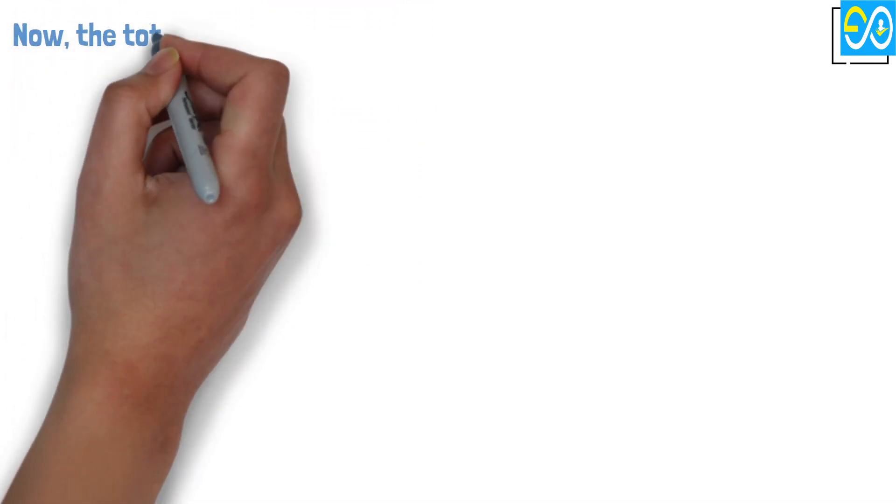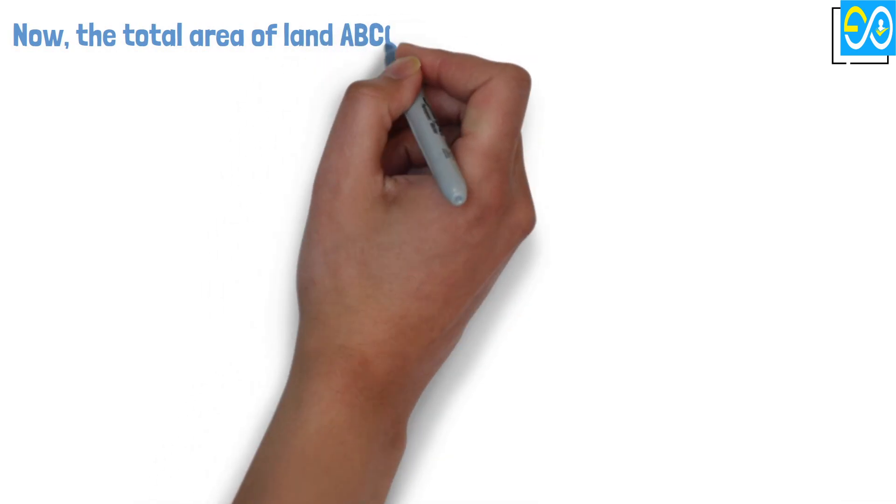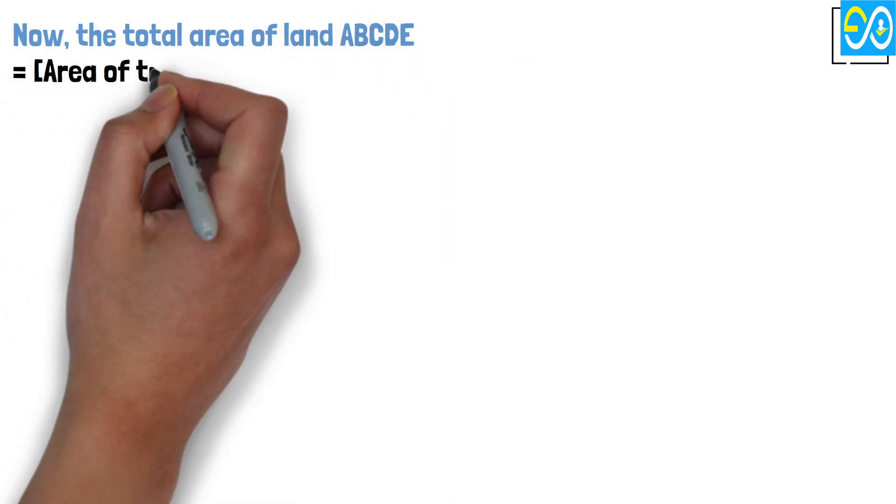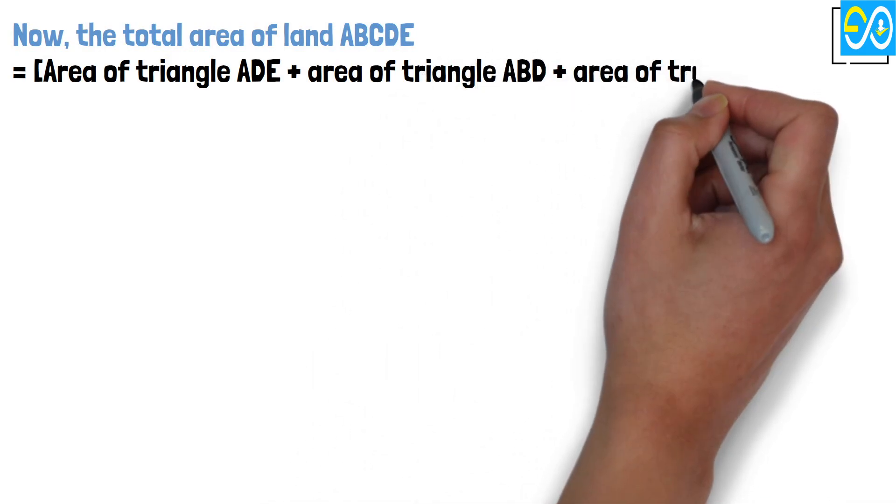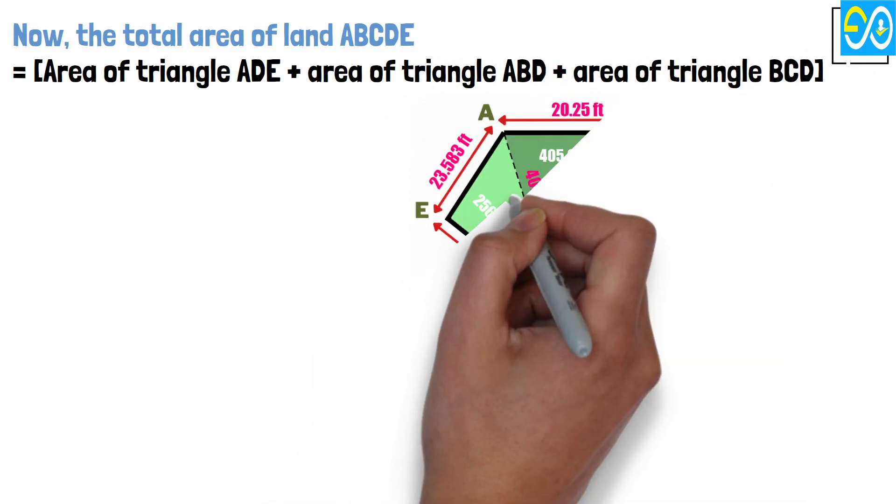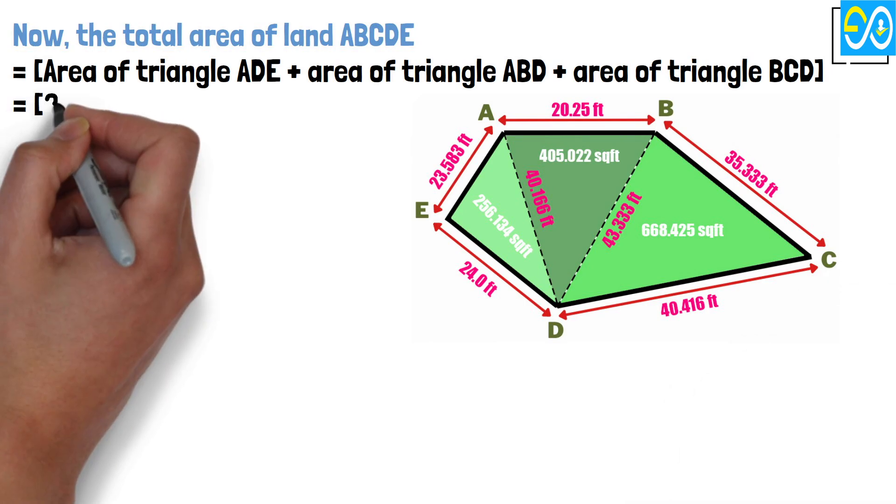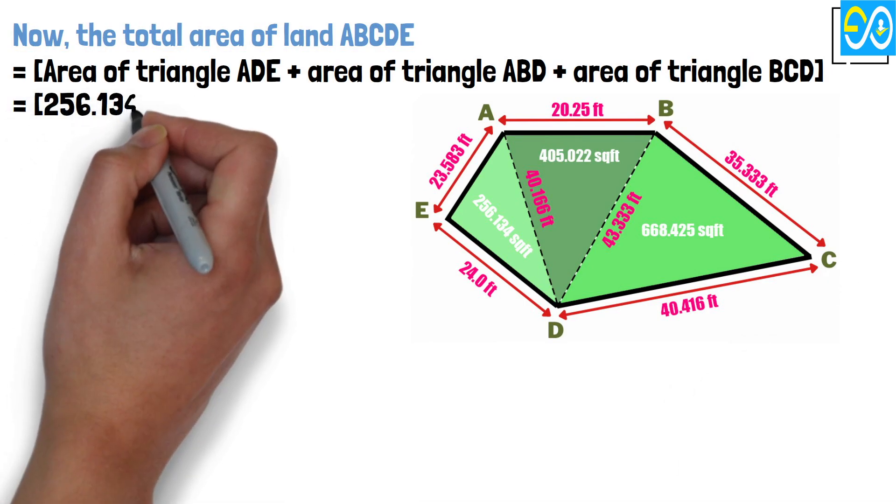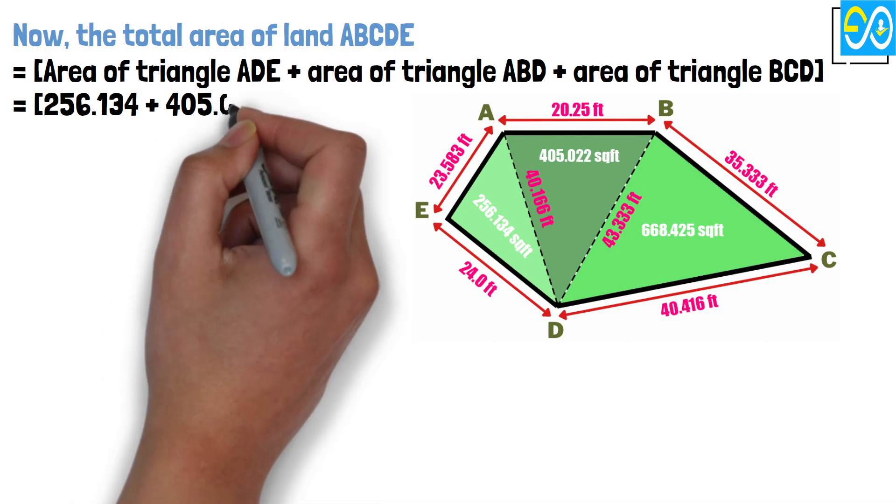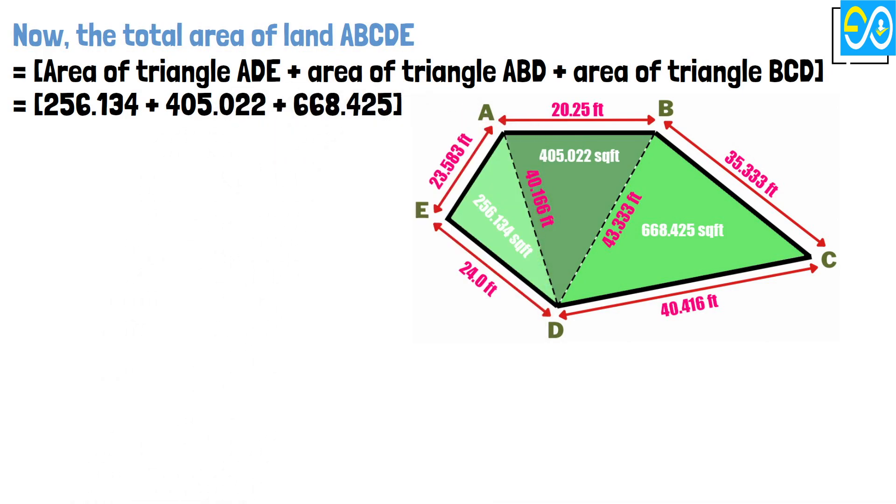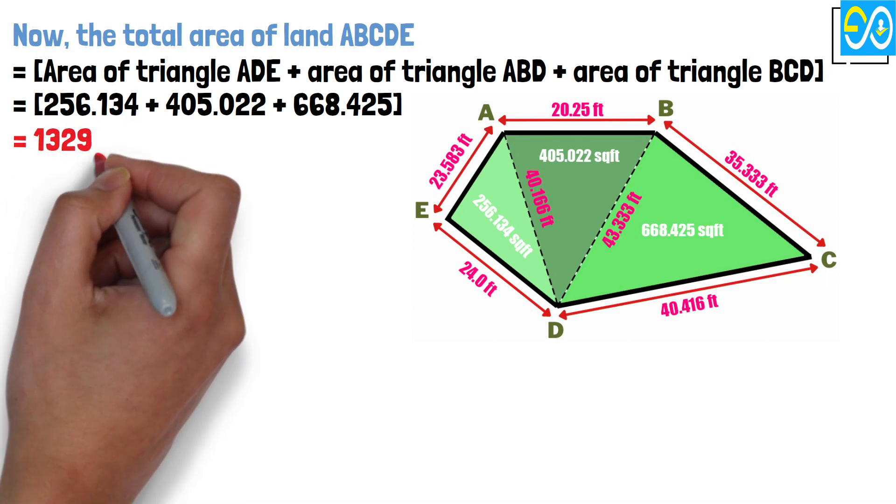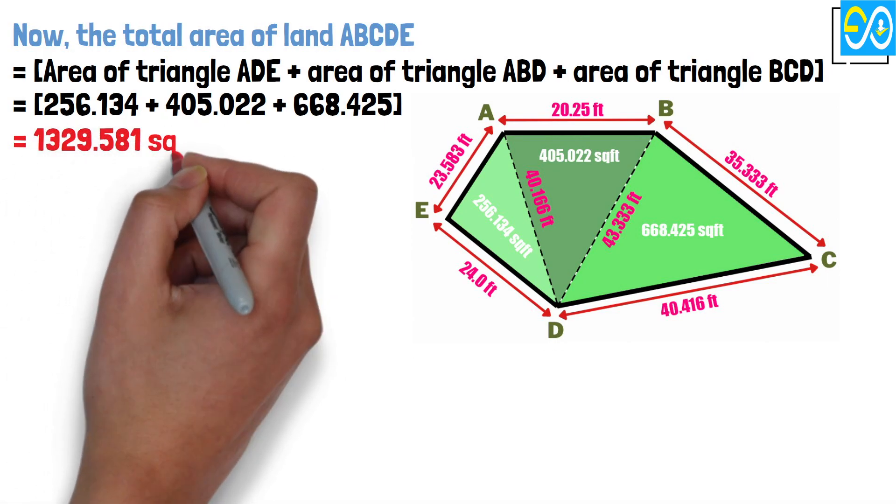Now, the total area of land ABCDE equals area of triangle ADE plus area of triangle ABD plus area of triangle BCD. Equals 256.134 plus 405.022 plus 668.425 equals 1,329.581 square feet.